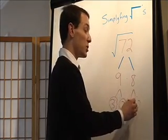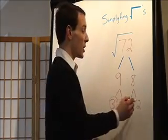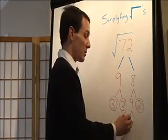8, we can make that 4 times 2. Again, 2 is prime. 4 isn't. Circle it. We'll keep going. That's 2 times 2.